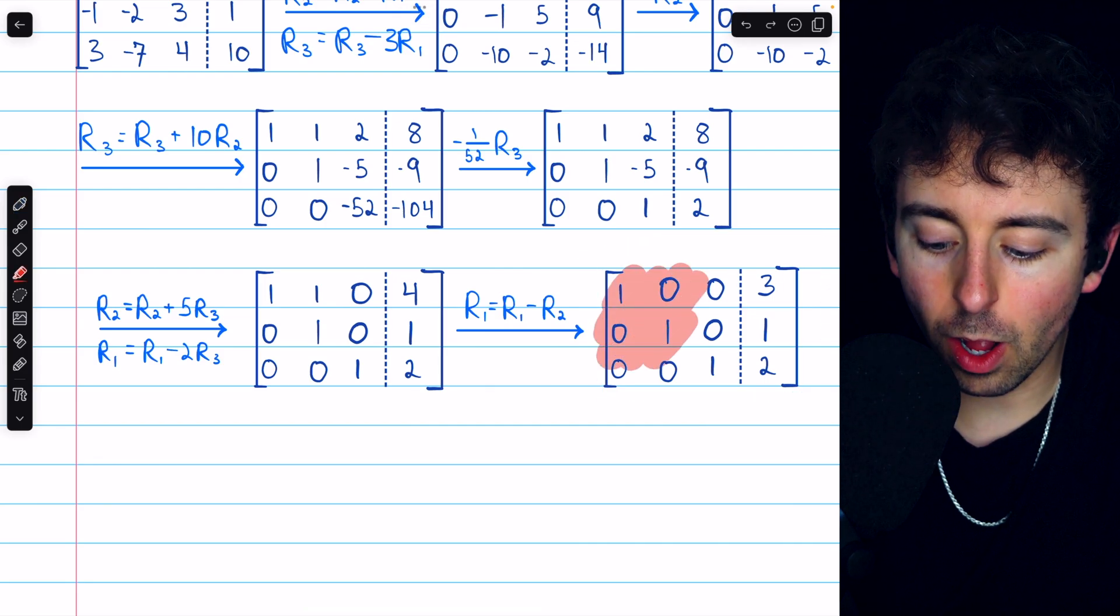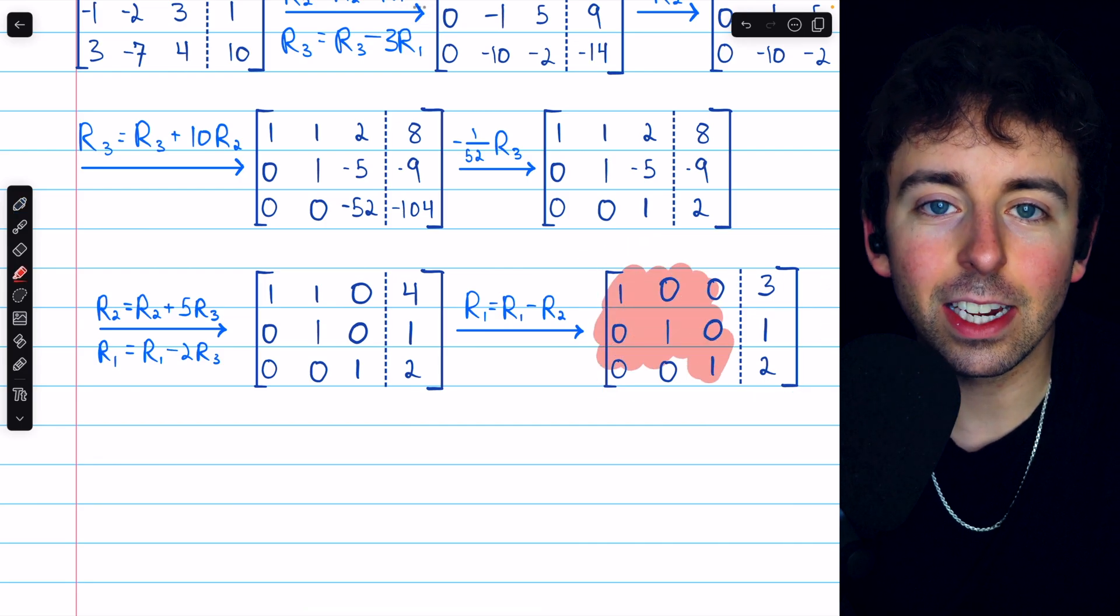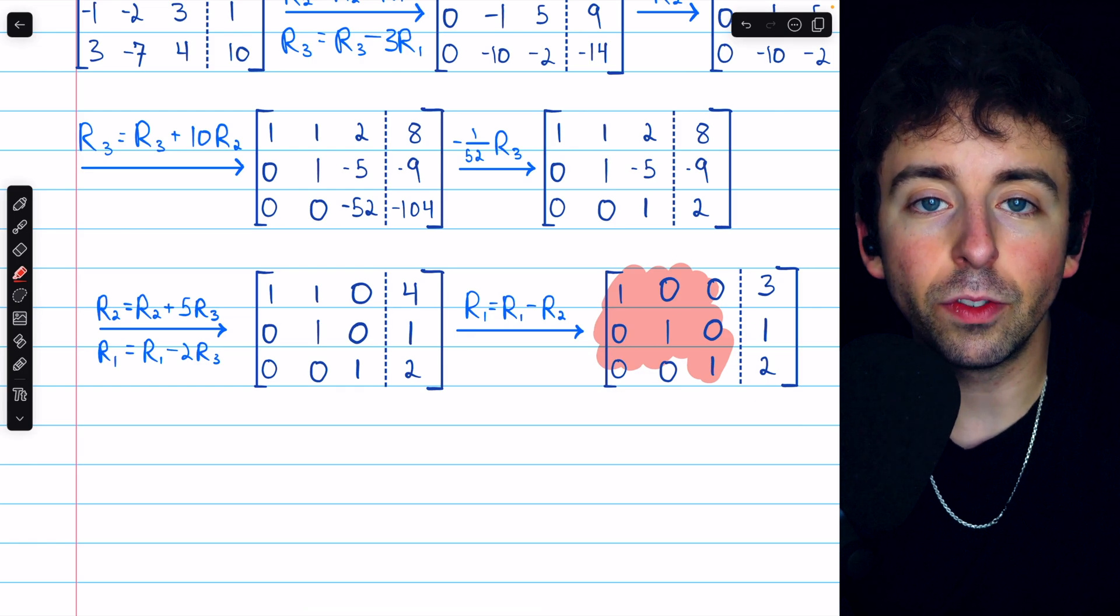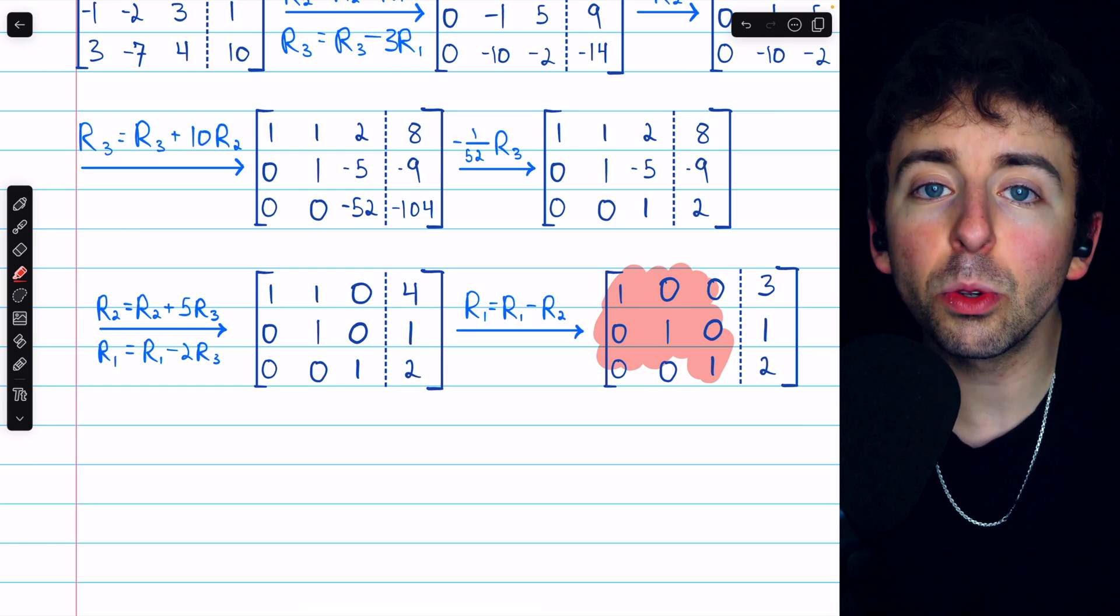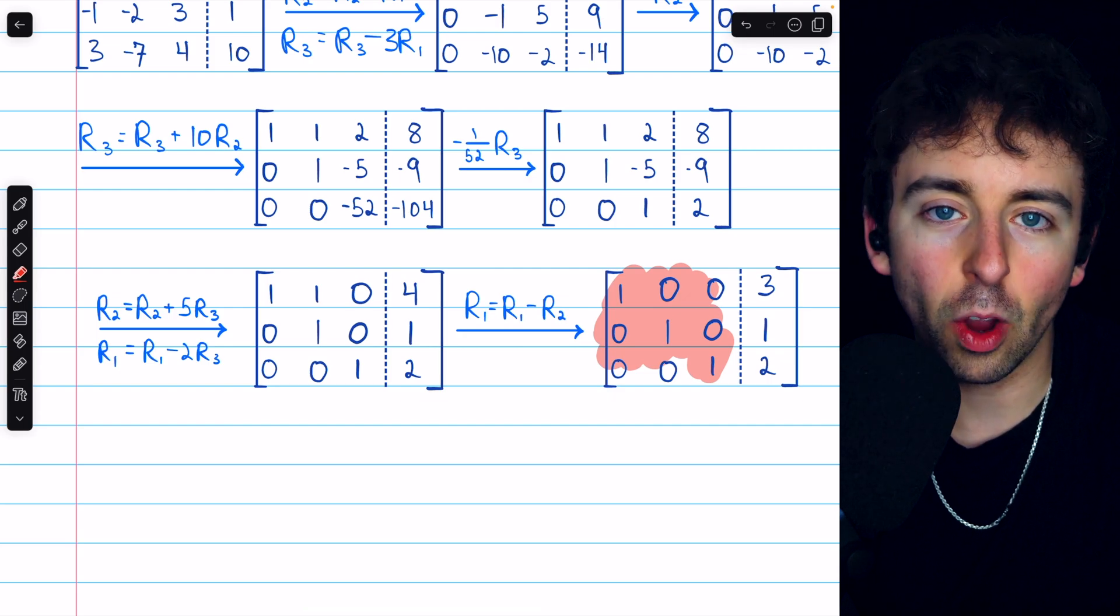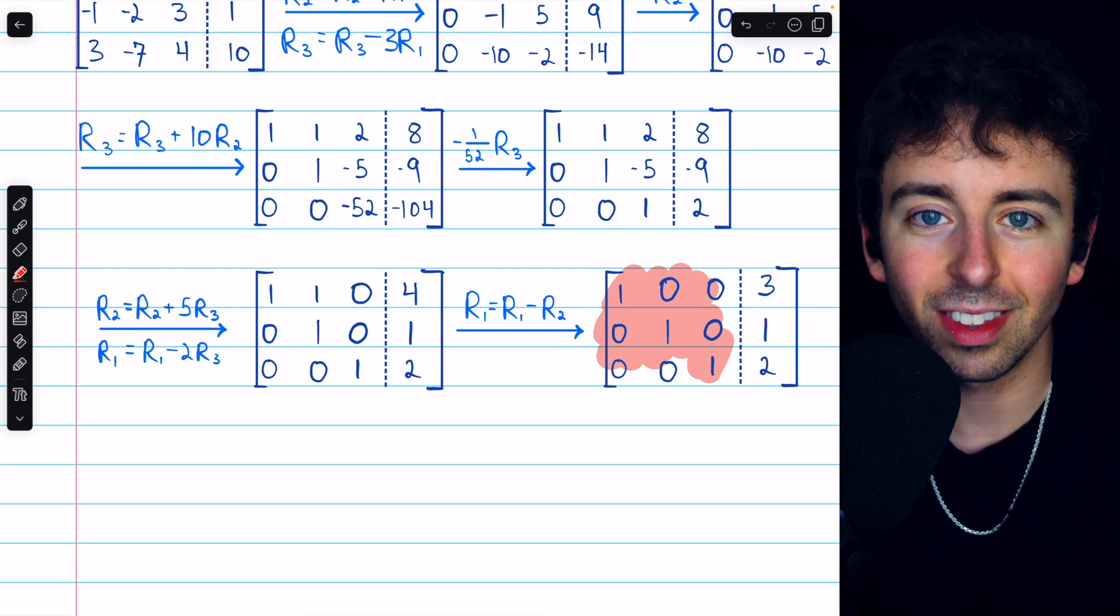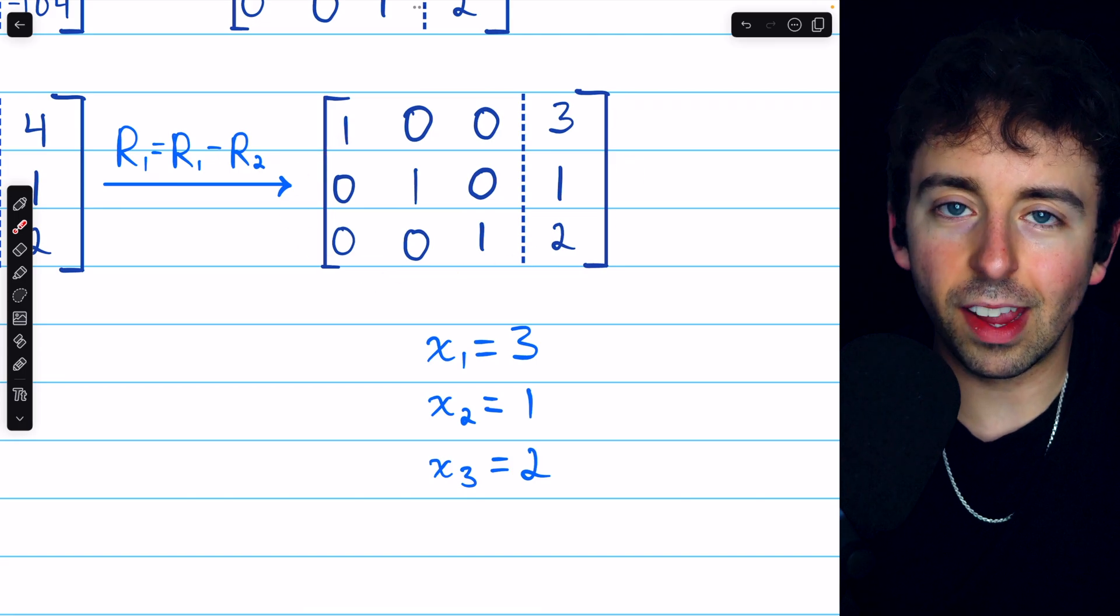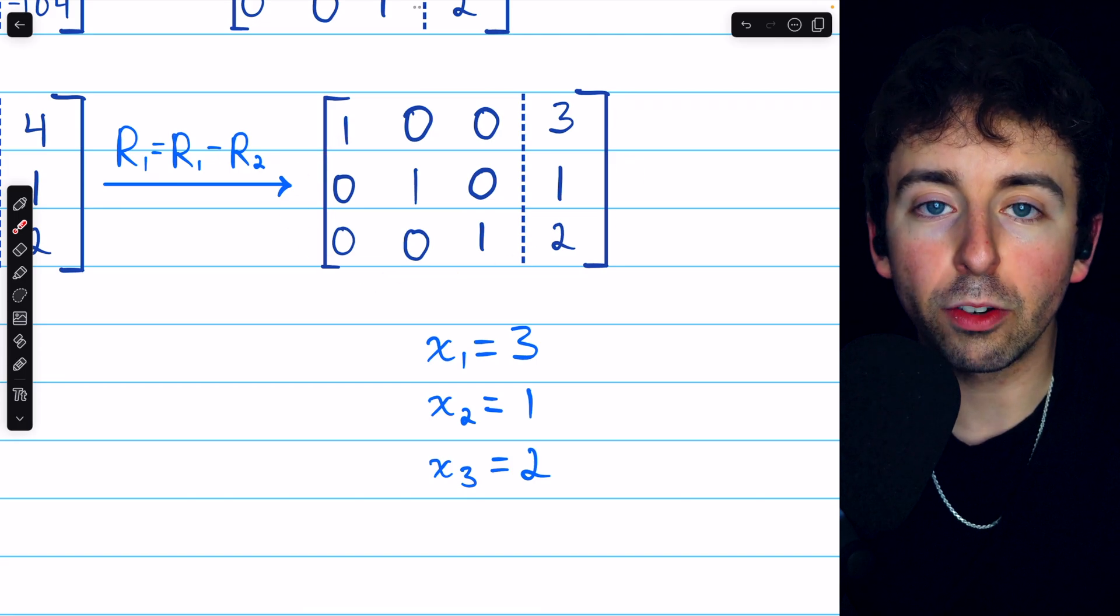The matrix we see here on the left is called an identity matrix, and the process we've just completed is called Gauss-Jordan elimination. I'll leave links in the description to my lessons going in more detail on both of those things. From this matrix, which is in what we call reduced row echelon form,